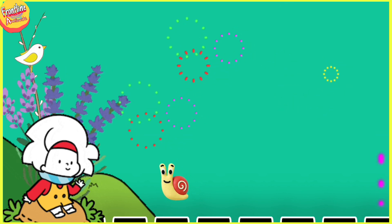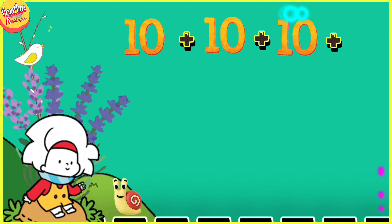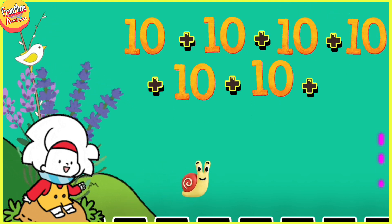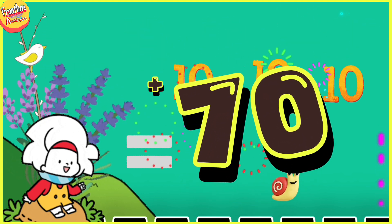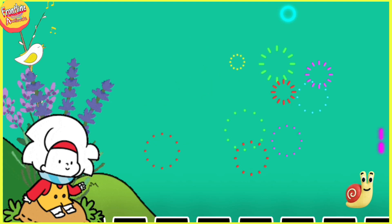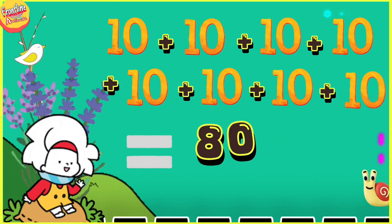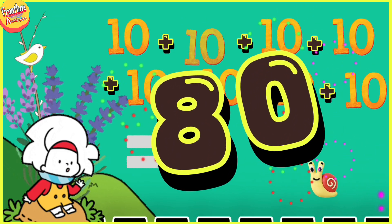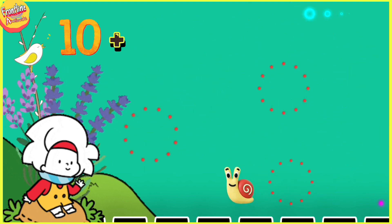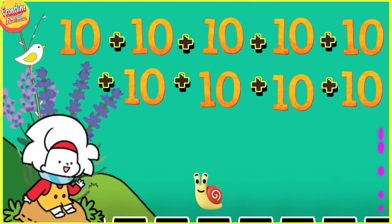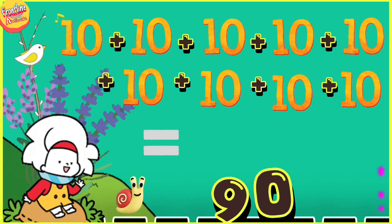Now we add 10 seven times — it makes 70! And if we add 10 eight times, what will it make? Yes, 80! Hey kids, you are doing very great. Now remember, if we add 10 nine times, what will it make? Yes, you are right — obviously 90!